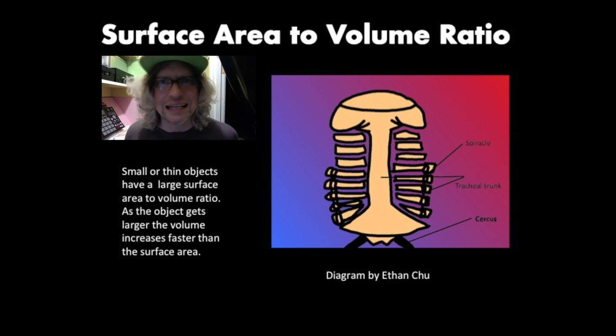Have you ever wondered why you don't see any giant insects walking around or why cells are so small? It has to do with something called the surface area to volume ratio. There's an important biological process called diffusion where molecules move from an area of high concentration to low concentration across a membrane. It's important for that membrane to have a lot of surface area relative to the volume of the object. If insects were to get too big, they would have too much volume relative to the surface area of their tracheal system that they breathe through.